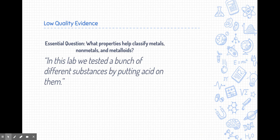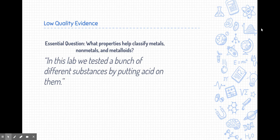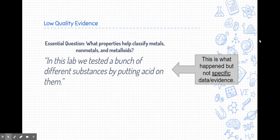Before we do that, let's talk about low-quality evidence, or let's give an example of this. Again, not calling any student out. This is just common things that we saw that could be improved upon. The essential question for this one was, what properties help classify metals, nonmetals, and metalloids? And some students said, in this lab, we tested a bunch of different substances by putting acid on them. This is what happened in the lab, but it's not specific data or evidence. Ideally, we need specific data. What samples did you put acid on, and what results happened to those samples that we can eventually use to support our claim?